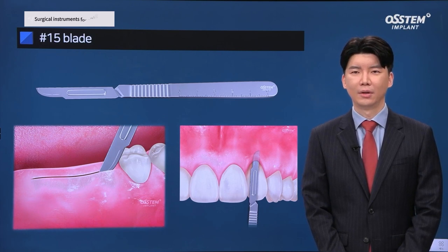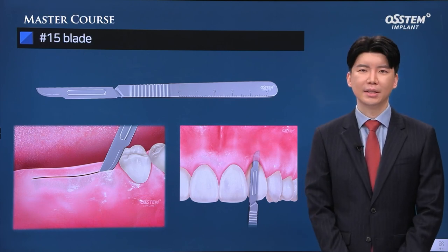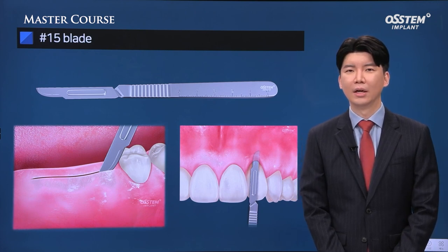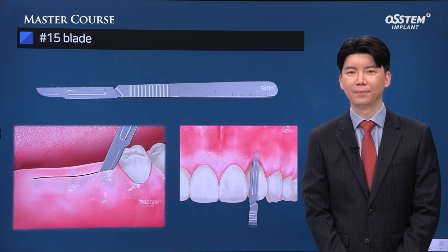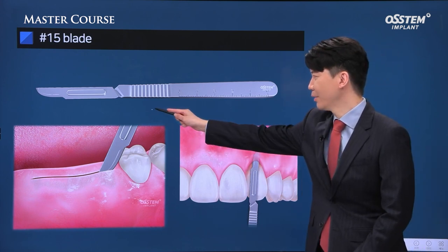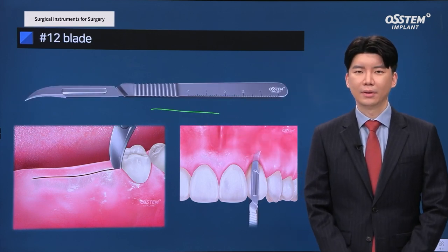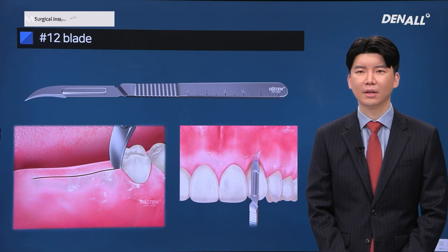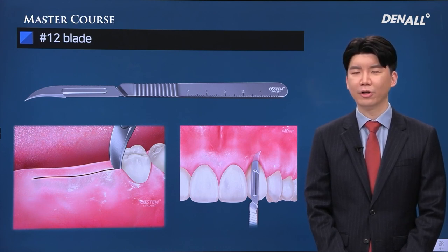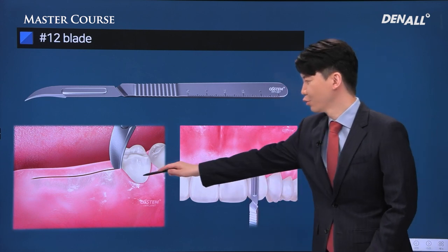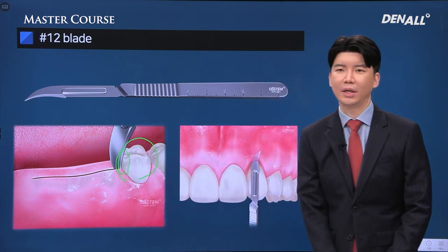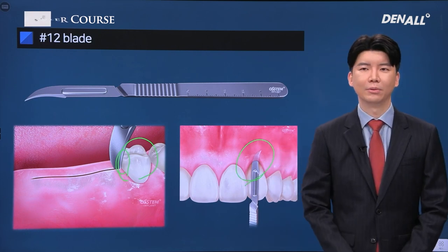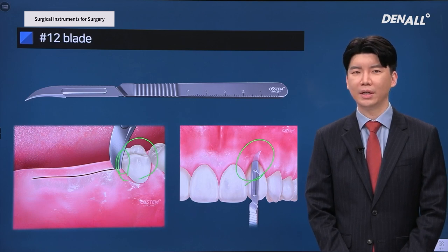For blades, it's useful to have three different types: number 15, 15C, and 12. Number 15 blade is used most frequently and has the most optimum form for use in the oral cavity. When making an incision, if the bone surface is irregular or the divergent angle prevents number 15 from accessing the flap, I use blade number 12 — typically at the most distal area adjacent to the surgical site and in the cervical area to incise collagen fiber.